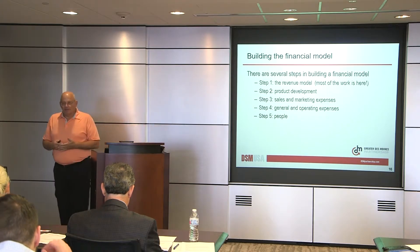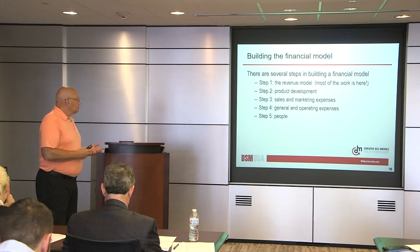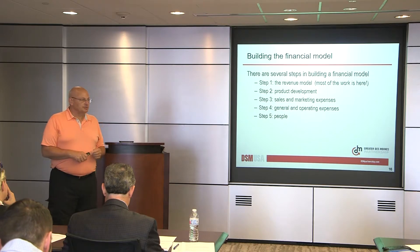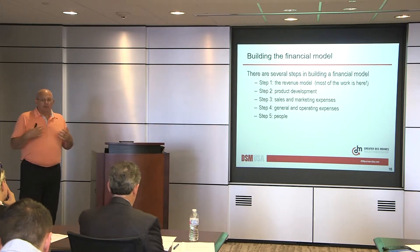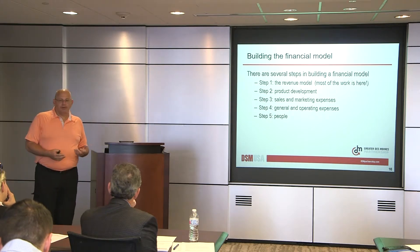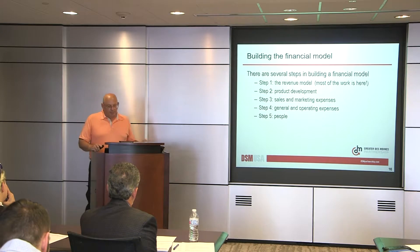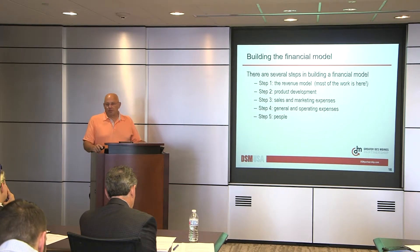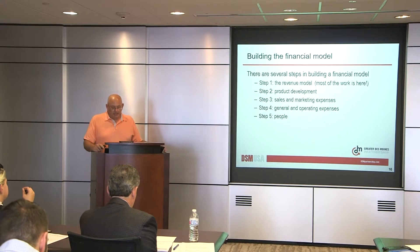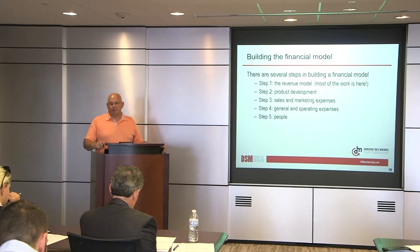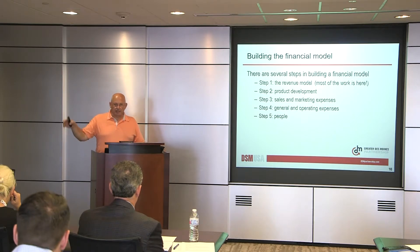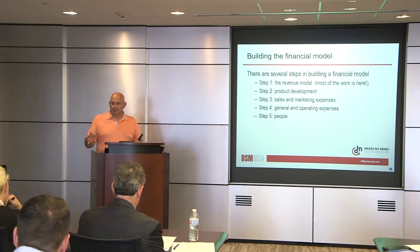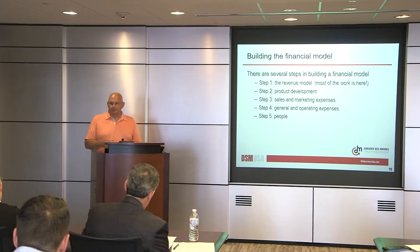Building your financial models — I put it into five steps. It starts with a revenue model, and this is where almost all the work is going to be. Then product development — if you're doing a physical product, this can get really expensive. Third, sales and marketing expenses. Fourth, general and operating expenses. And fifth, people — but I recommend you hold off on the cost of people until the end, after you've figured out what you need to do first.